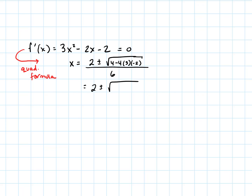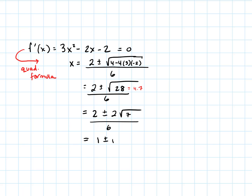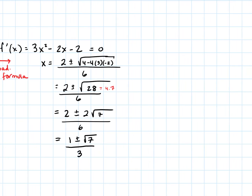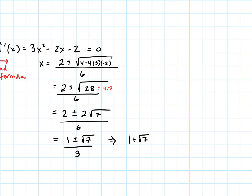We want to know when f'(x) equals zero. It doesn't factor, so we go to the quadratic formula. x equals two plus or minus the square root of four minus four times three times negative two, all over six. That gives us the square root of 4 plus 24, which is the square root of 28, over 6. Simplifying: 28 equals 4 times 7, so we get 2 root 7 over 6, which reduces to 1 plus or minus root 7 over 3.